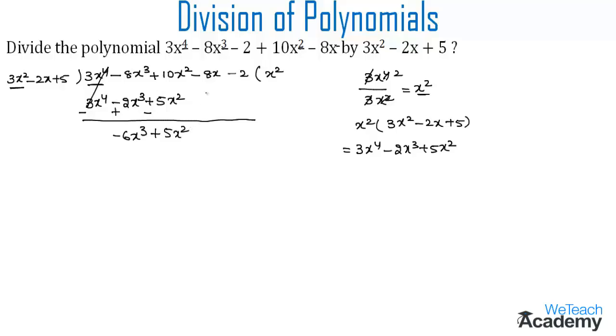Now let us bring the next term, minus 8x, down. So we get the new dividend as minus 6x³ plus 5x² minus 8x.